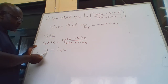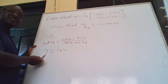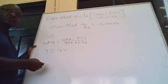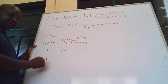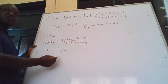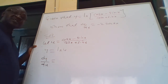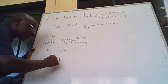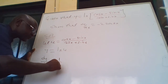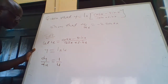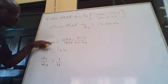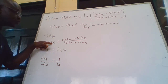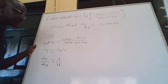Now we can differentiate y with respect to u. That is, dy/du equals — when you differentiate ln of u, you get 1 over u. So once we get this, we can now differentiate u with respect to x.